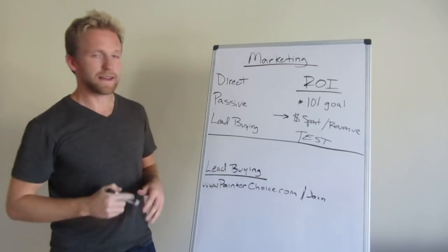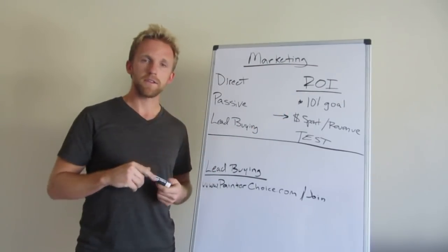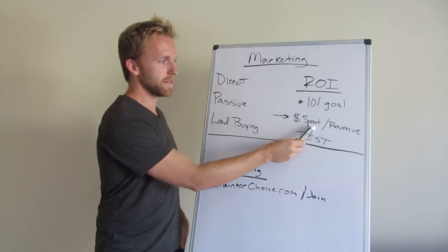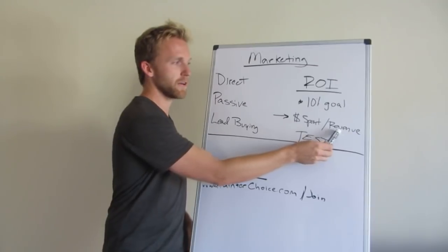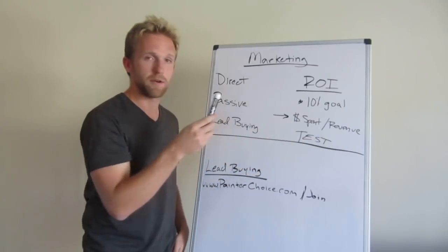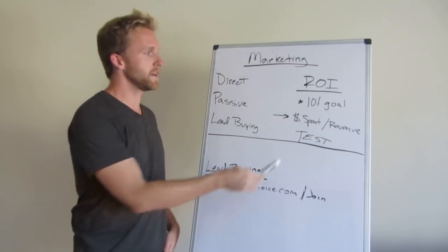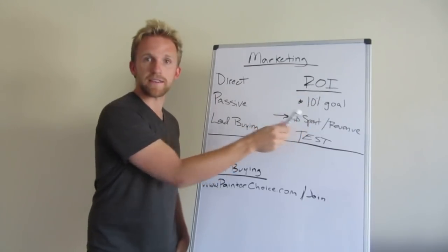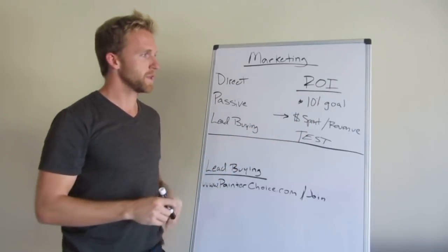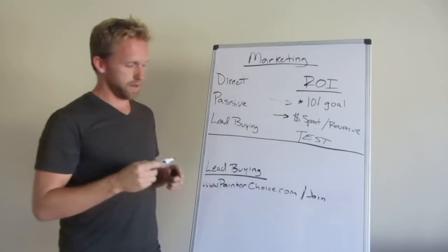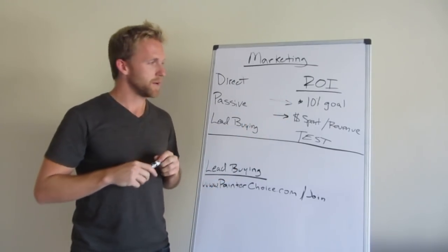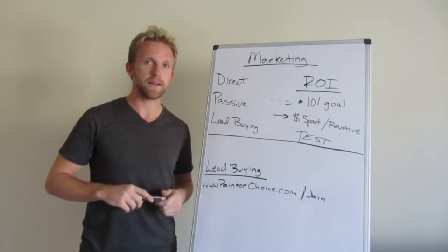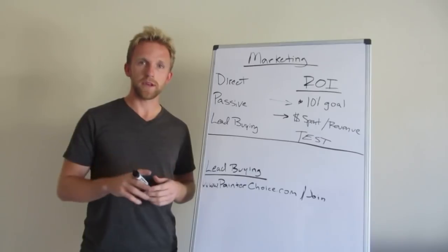Once you do get good at sales, marketing is incredibly easy because the whole key to marketing is your return on investment. So what I mean by that is if you spend $1,000 on marketing and you generate $10,000 in revenue, that would be 10%, which is how much you spent on marketing. So I would really be focused on 10% or less. In my business, our marketing expense is actually about 3% to 5%, but that's because we're really good at sales.